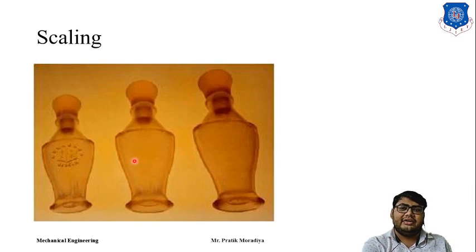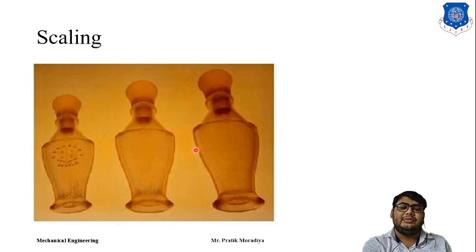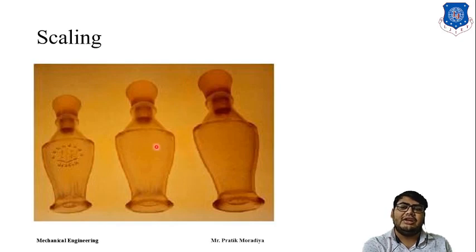These perfume bottles will have the same geometry and form, but their size and dimensions will be different, so their capacities will also be different. Since the geometry is the same, to rapid prototype three different bottles with different capacities, we do not need three different CAD models. We can use a single CAD model and produce three different scales using Rapid Prototyping technique. This is one application where scaling allows us to build and verify different capacity parts.